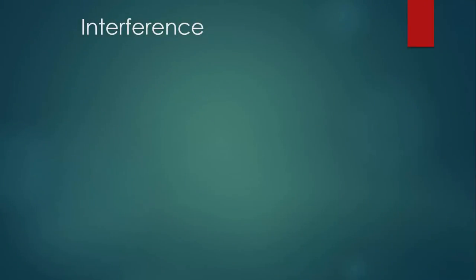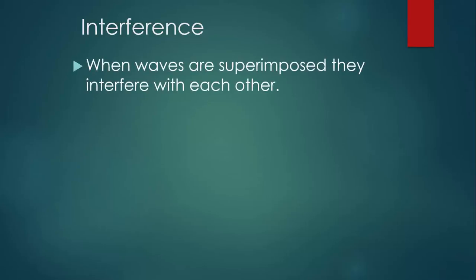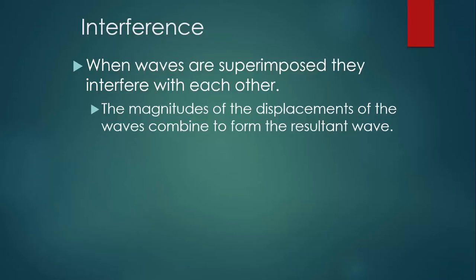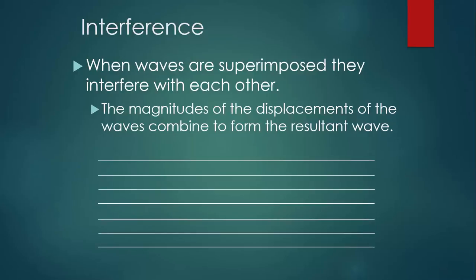The first phenomenon is known as interference. When two waves are superimposed, they will interfere with each other. This means that the magnitudes of the displacements of the waves combine to form the resultant wave. Take a look at this simple example: we have a red pulse moving toward the right and a blue pulse moving toward the left. Eventually they get to the same place at the same time. Assuming this is a mechanical wave, the particles of the medium can't be in two places at the same time, so the displacements of the red pulse and the blue pulse combine to give us the resulting wave.